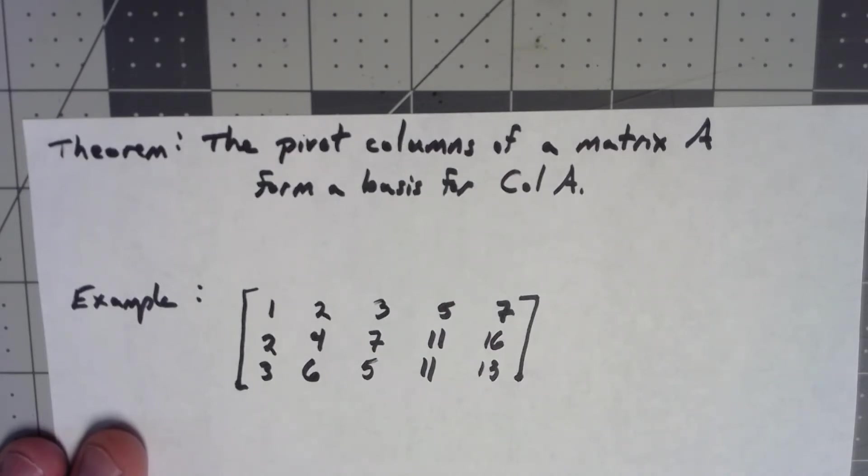Because we know that the non-pivot columns are linear combinations of the columns that came previously. So by basically saying we remove those non-pivot columns, we remove the ones that were linearly dependent, what's left is linearly independent and spans the same set. What's left forms a basis for the column space.